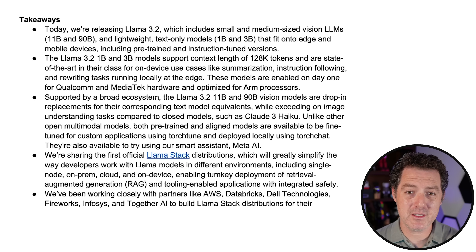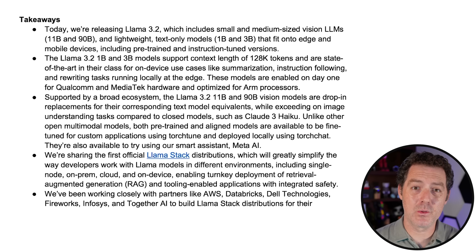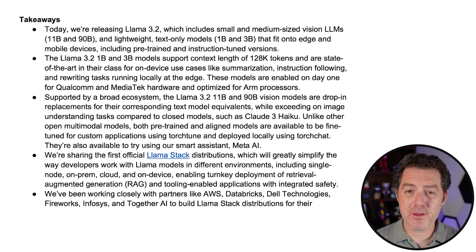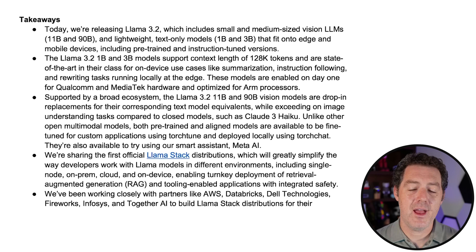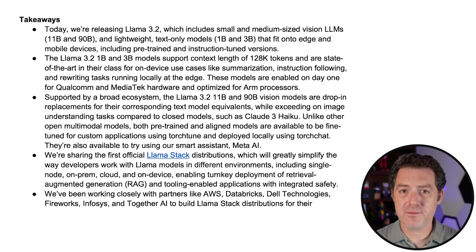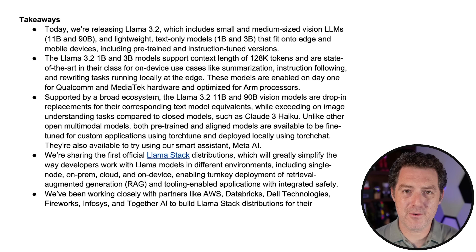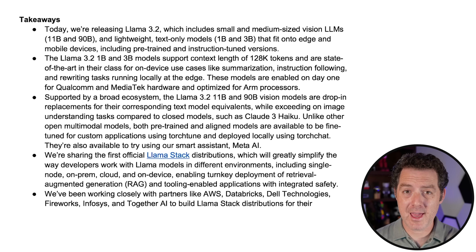Llama 3.2's 1 billion and 3 billion parameter text-only versions are pre-trained and instruction-tuned, ready to go. I can imagine these fitting easily into the Meta AI Ray-Ban glasses. The 1 billion and 3 billion parameter versions have 128K context windows out of the box, and they are state-of-the-art compared to their peers on use cases like summarization, instruction following, and rewriting tasks — all running locally. This confirms what I believe the future of AI looks like: a bunch of really small, capable, specialized models that can run on device.